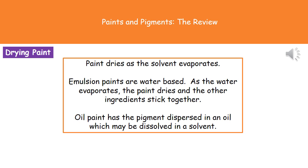In terms of paint drying, what's actually going to happen is that as the paint dries, the solvent is evaporating. There are two types of paint we can buy in the shops: emulsion paint, which is water-based, or oil paint.